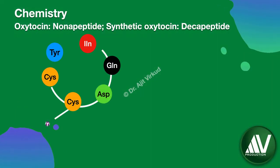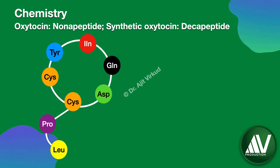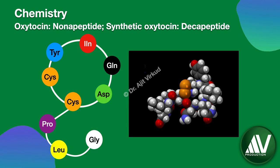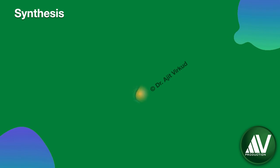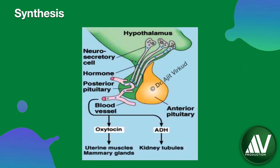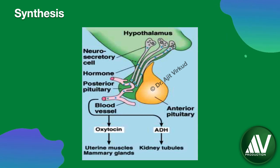Oxytocin is a nonapeptide, but its synthetic form — Syntocinon or Pitocin — is a decapeptide. Its chemical formula is shown here. In the human body, neuropeptide oxytocin is synthesized by the supraoptic and paraventricular nuclei of the hypothalamus and is transferred to the posterior pituitary gland by carrier proteins via the hypothalamo-hypophysial portal circulation. It functions as both a neurotransmitter and a hormone.